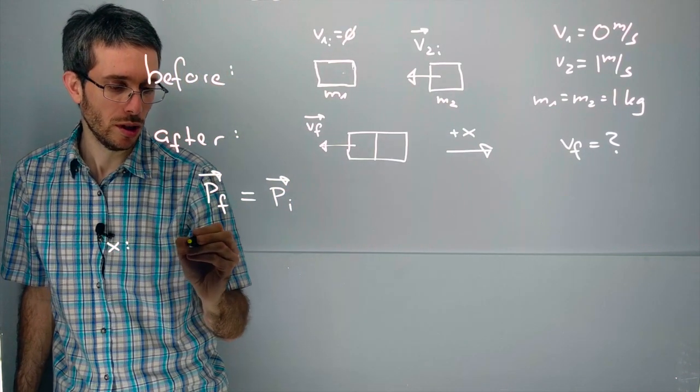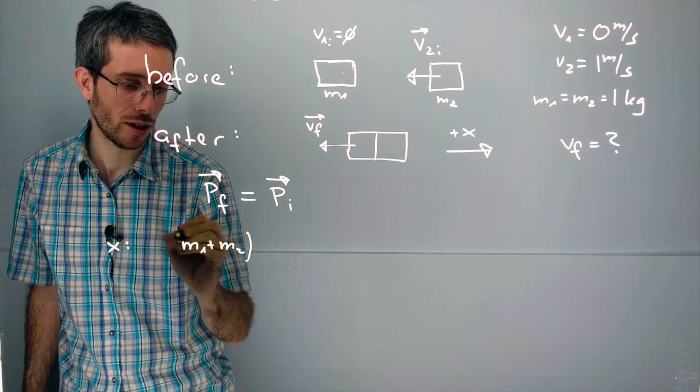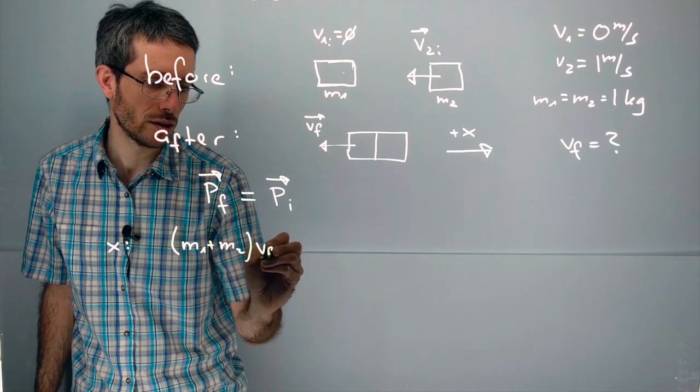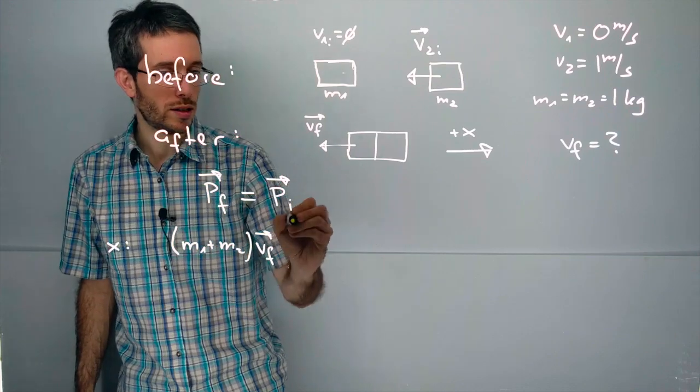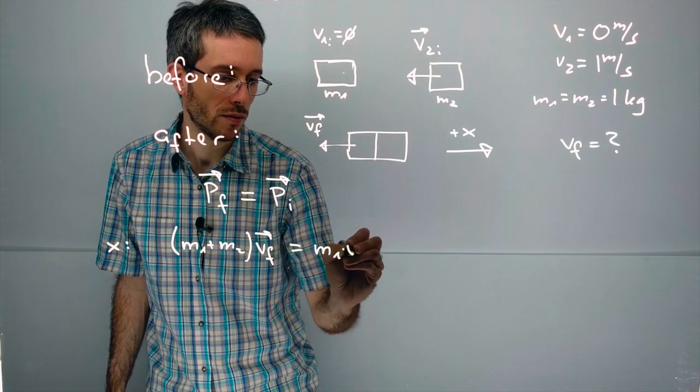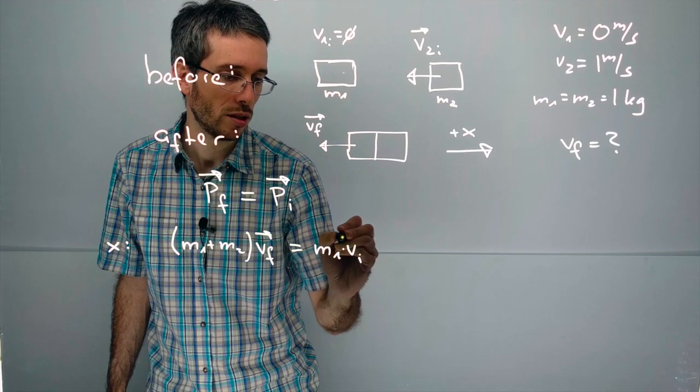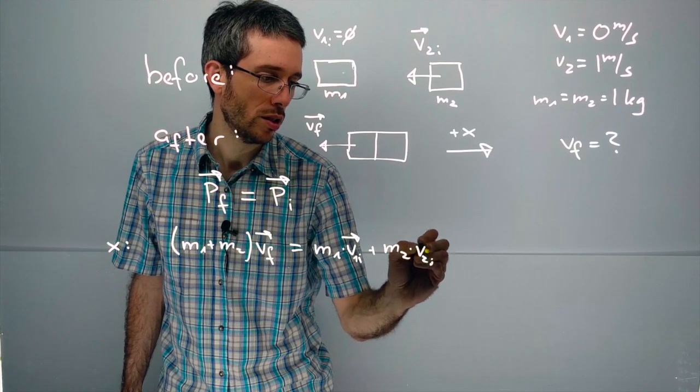this one will translate into mass 1 plus mass 2 traveling together at some final velocity equals mass 1 times its velocity initial plus mass 2 times its velocity initial.